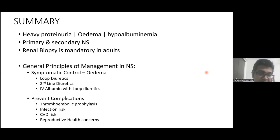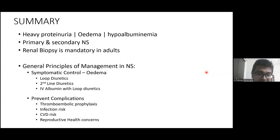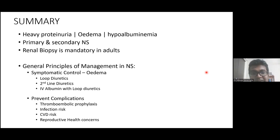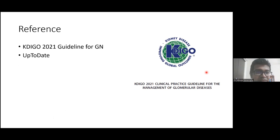Infection prevention includes prophylactic vaccinations and cotrimoxazole prophylaxis for patients on significant immunosuppression to prevent PCP. Cardiovascular risk is addressed by controlling lipid levels; if nephrotic syndrome is not resolving after three to six months, statin therapy should be started. Reproductive health concerns — including contraception and fertility — must be addressed, particularly in patients on teratogenic drugs. This discussion was based mainly on the KDIGO 2021 guidelines on glomerular nephritis.